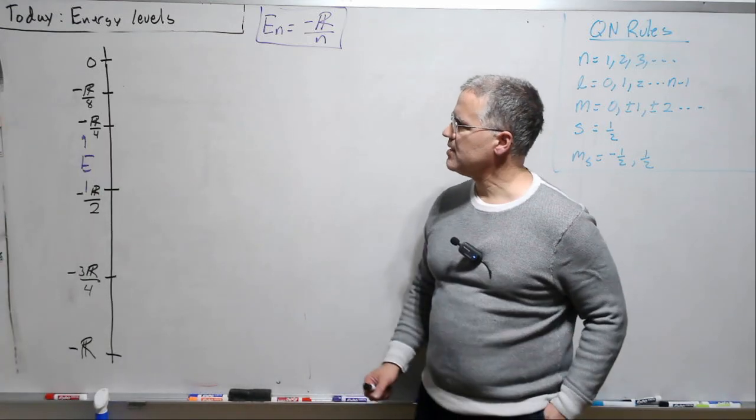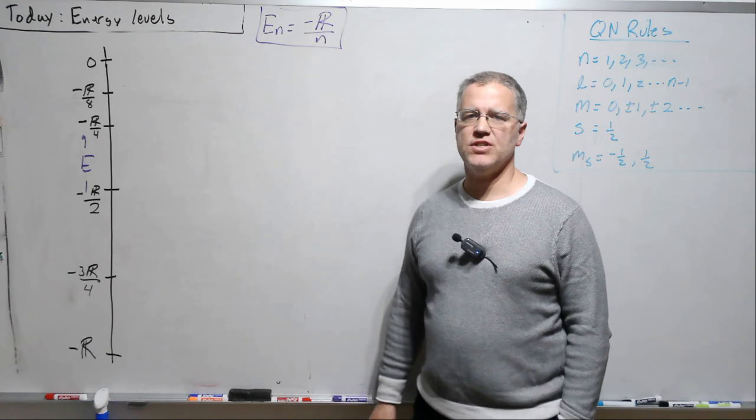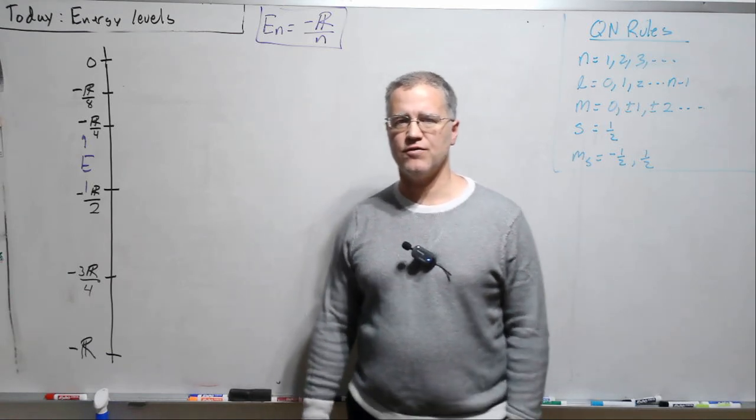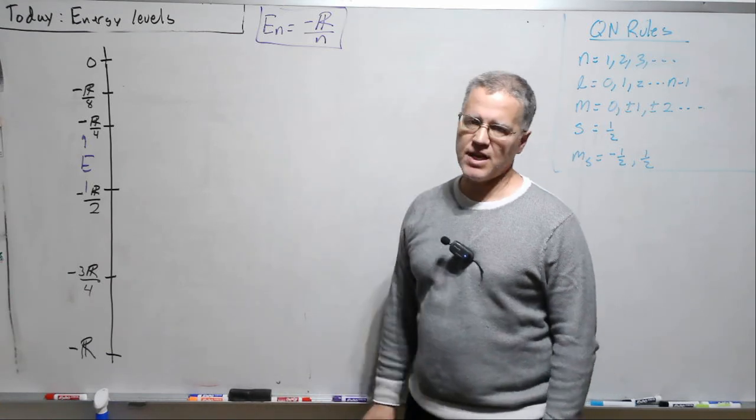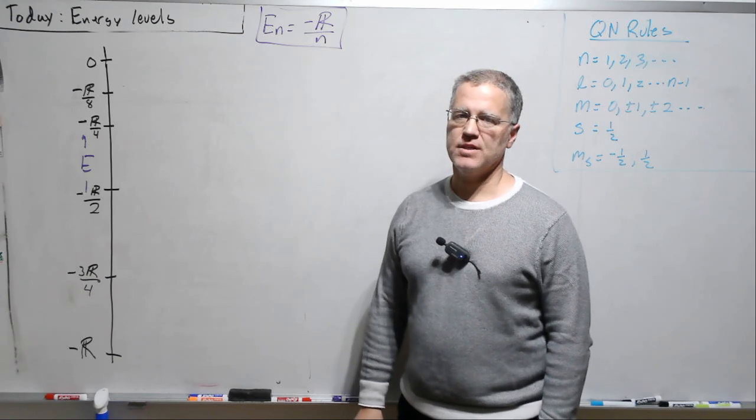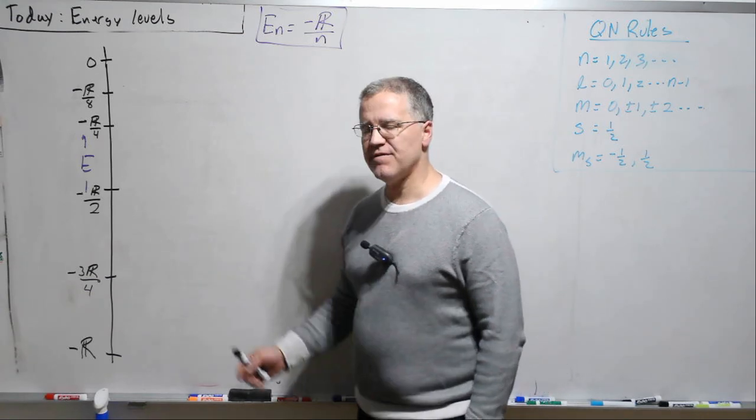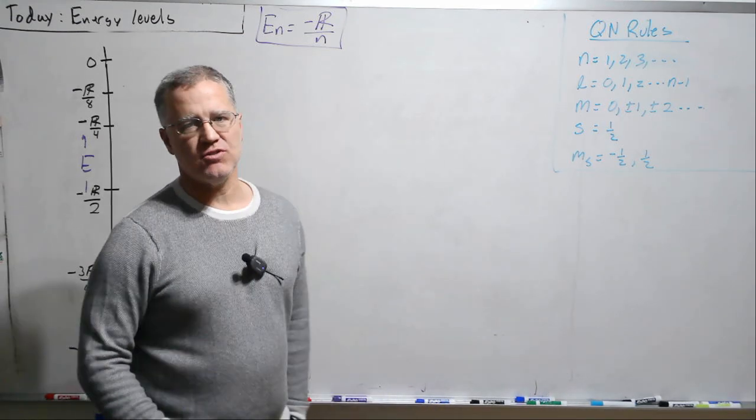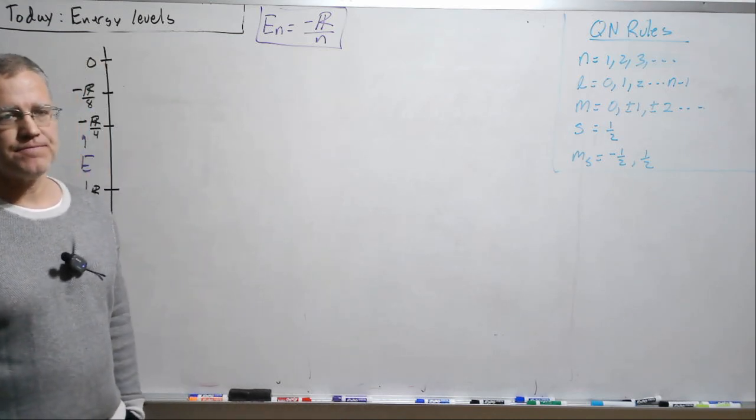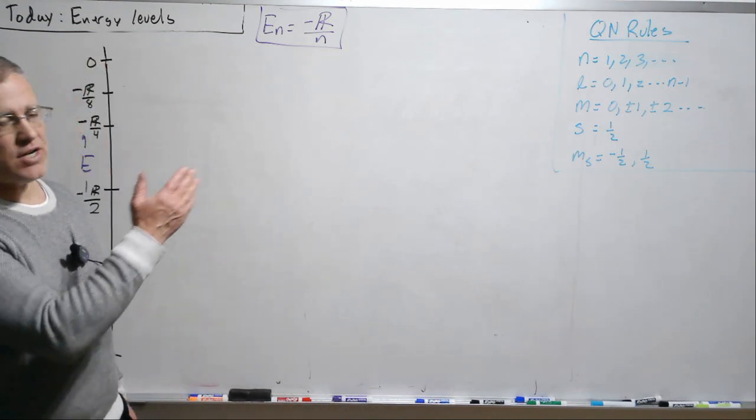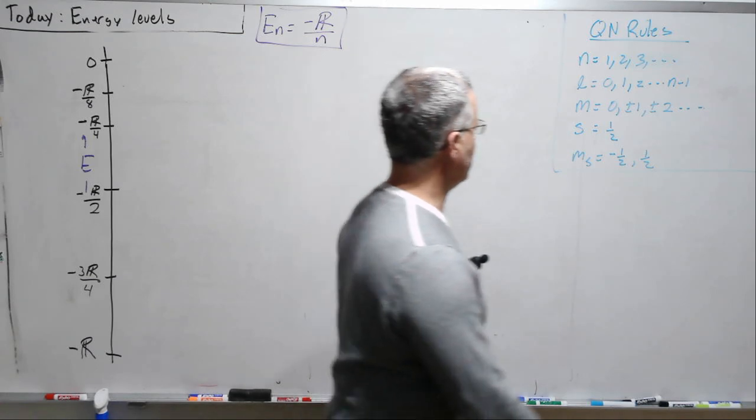Okay, I think we'll get started. So we're continuing our discussion of the results of quantum mechanics for hydrogen, and today we're going to talk about the energy levels. What we're going to do is develop the energy level diagram for hydrogen, and we do that by starting with the quantum number rules. So let's review those rules.